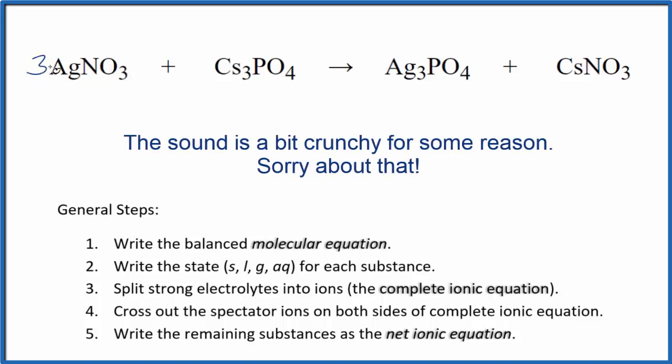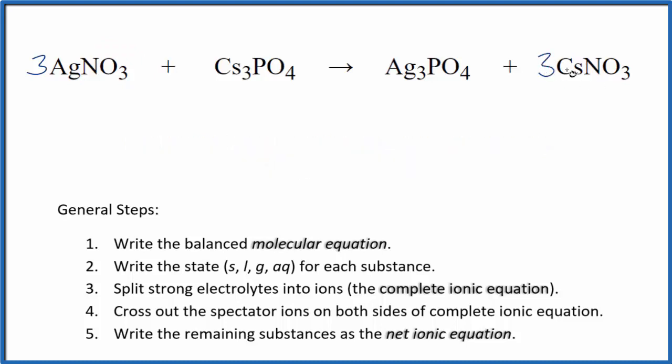So that balances the silver atoms. Now we have these three nitrates. We put a three here, we'll have three nitrates, but we'll have three cesium atoms. That's okay, we already have three here. We have a phosphate and a phosphate. That's the balanced molecular equation.